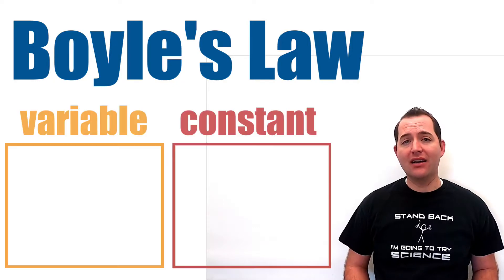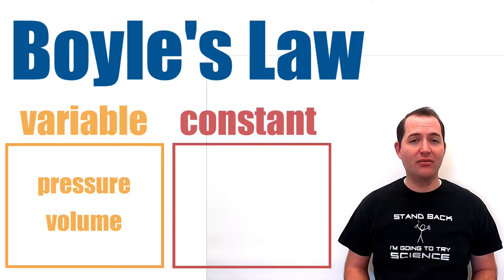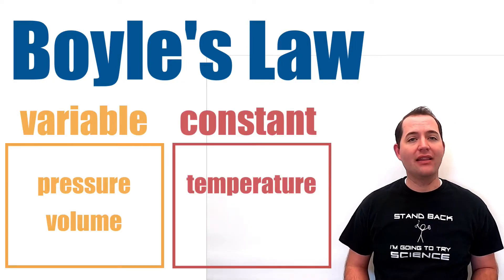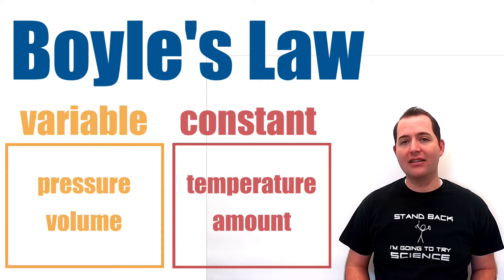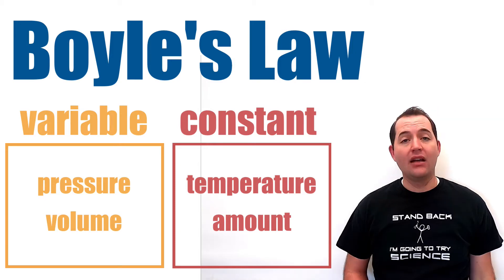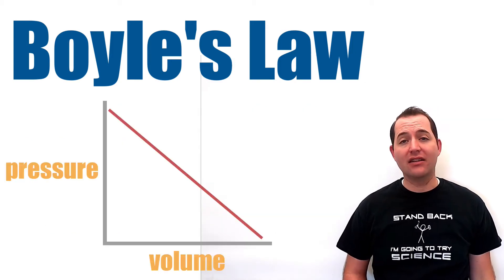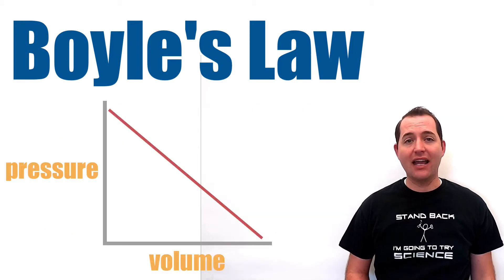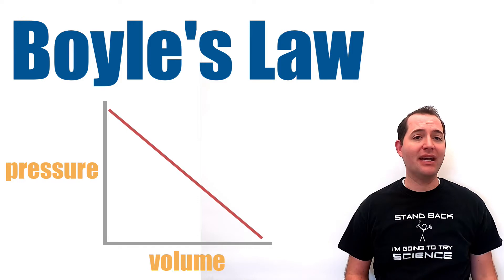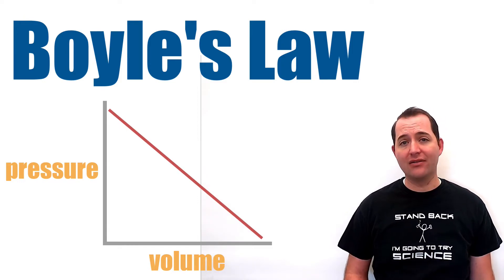Boyle's law is a gas law that relates pressure and volume. When temperature and the amount of gas are kept constant, pressure and volume have an inverse relationship. As the pressure increases, the volume decreases, and as the space or volume a gas takes up increases, the pressure will go down.